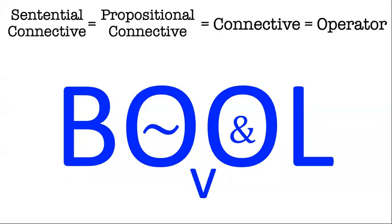Hi folks, in this video we continue our discussion of our first logical system, Bool. The key concept of Bool is that of the Boolean connectives, the sentential connectives. There are a bunch of words I'm going to use interchangeably. Sometimes people talk about sentential connectives because the Boolean connectives connect whole sentences. Sometimes basic atomic sentences are called propositions, so the Boolean connectives are sometimes called propositional connectives. I'm just going to call them all connectives.